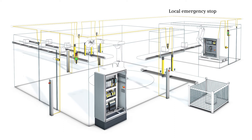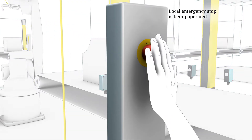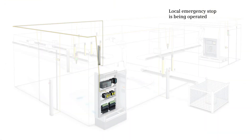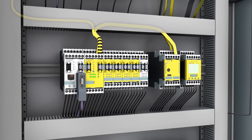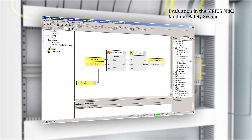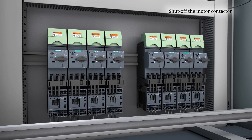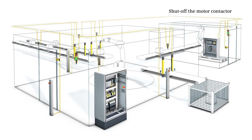Example: Emergency Stop. If the local emergency stop is operated on the parcel feed conveyor of our example plant, the stop signal is read into the 3RK3 modular safety system via ASI. The system evaluates the signal and then transmits the shutdown command onto the assigned safe ASI output. This opens the motor contactors and immediately shuts down the motors of the two parcel feed conveyors and the robot.